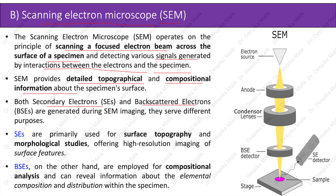Both secondary electrons and backscattered electrons are generated during SEM imaging, and they serve different purposes. In the diagram, the electron beam from the electron source passes through the condenser lenses, which condense it towards the specimen. From the specimen, secondary electrons and backscattered electrons are generated, for which we have different detectors — one for secondary electrons and one for backscattered electrons.